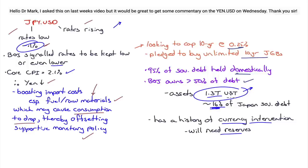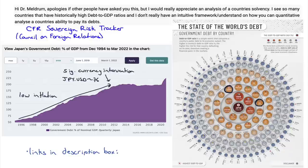Japan owes its debt to its own people at super low interest rates — negative 0.1%. How much debt do you want to carry at that rate? You do that all day long. And 16% of their debt could be said to be immunized with 1.3 trillion in Treasuries. Still, if they don't raise rates the yen will continue to weaken, pushing Japan into a recession, since they have no domestic raw material or fuel production. Currency intervention is probably the more likely course they would take.